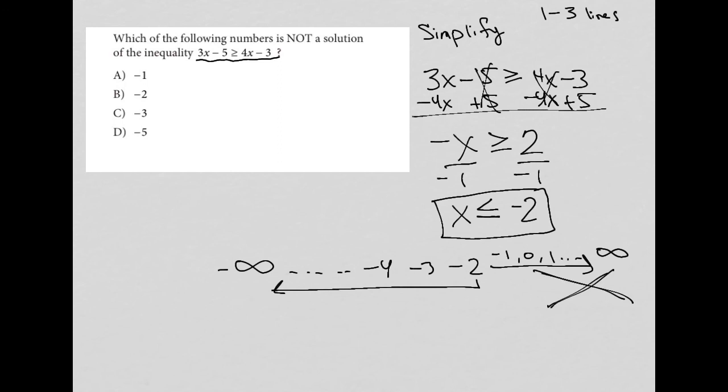So let's look at the answer choices. Negative 1 for choice A. Well, negative 1 is on this side of the dividing line at negative 2, making it greater than x, which is not what we want. So we found it right away. Our answer must be choice A.